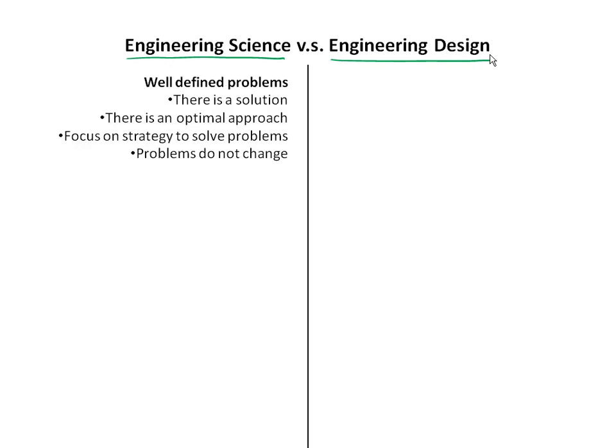In engineering science, typically you're given well-defined problems. There is a solution of some type. If you're given a homework set, you expect to converge and have the problems have solutions — it's very rare that they don't. There's also an optimal approach. You can define optimal in different ways: it essentially takes the least time, it has the most accurate answer. But depending on how you define optimal, there's an approach that's pretty optimal.